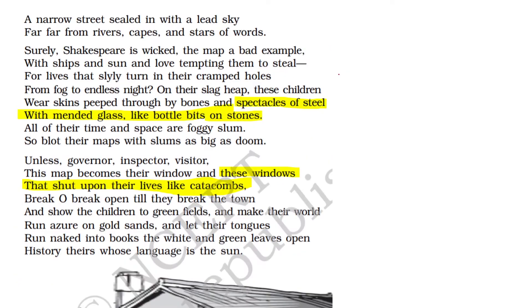Let us check other similes in the poem. 'Spectacles of steel with the mended glass like bottle bits on stones' — here also the linking word 'like' is used, so simile is the poetic device. Another simile: 'the window that shut upon their lives like catacombs.' The windows are compared with catacombs, the graveyards, using 'like.' So here also the poetic device of simile is used.